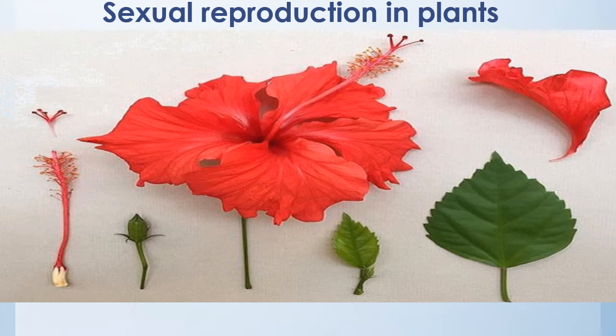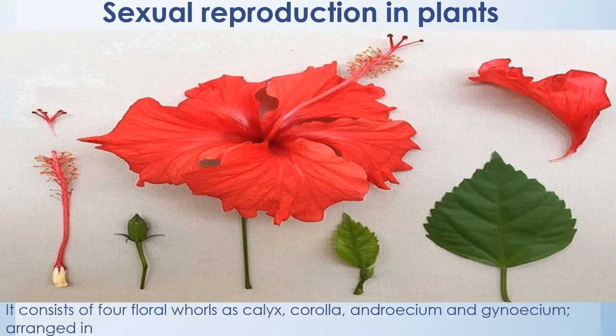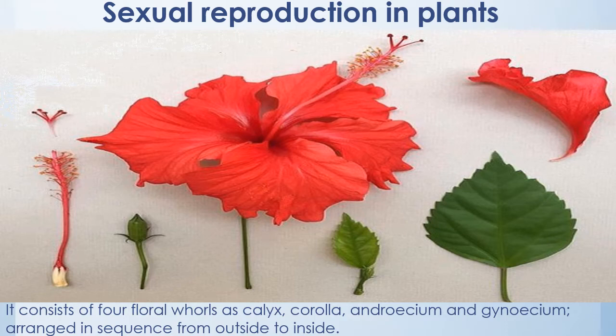Can you remember this flower? It's a hibiscus flower. It consists of four floral whorls arranged in a sequence from outside to inside: calyx, corolla, androecium, and gynoecium.